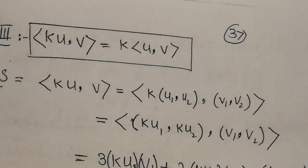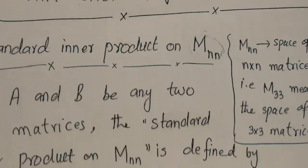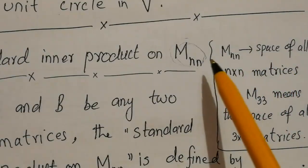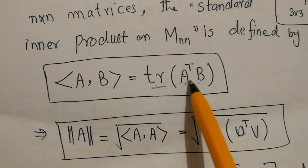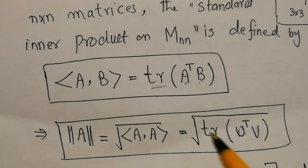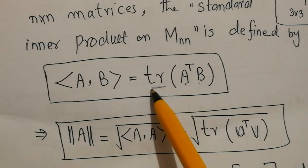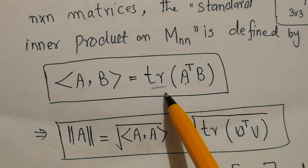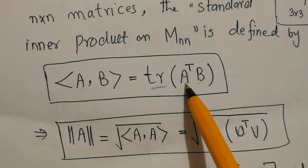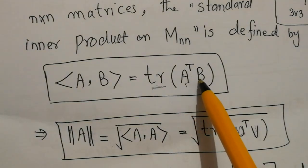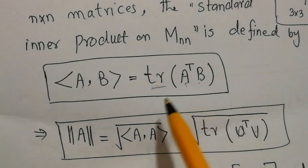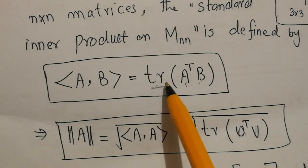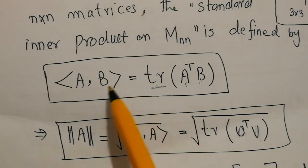The inner product between two matrices: suppose we are dealing with a vector space of n×n matrices. The inner product between two matrices A and B is defined as the trace of A-transpose times B. Here, trace is the sum of the diagonal elements of a matrix, and A-transpose is obtained by converting the rows of matrix A into columns. I'll explain this with an example.